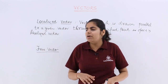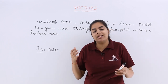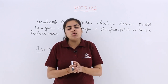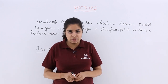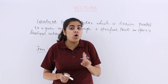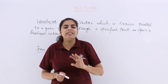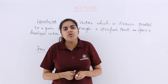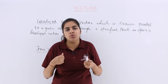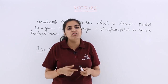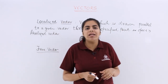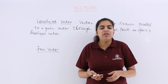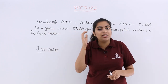Free vectors are those wherein we don't have any constraint on the line of action of the force or anything like that. For example, a force acting on a rigid body — which you must have studied in physics — is not a free vector but rather a localized vector. This is because the line of action of force matters; it is very important which direction you are applying the force. So that is a localized vector, while most other vectors are free vectors.